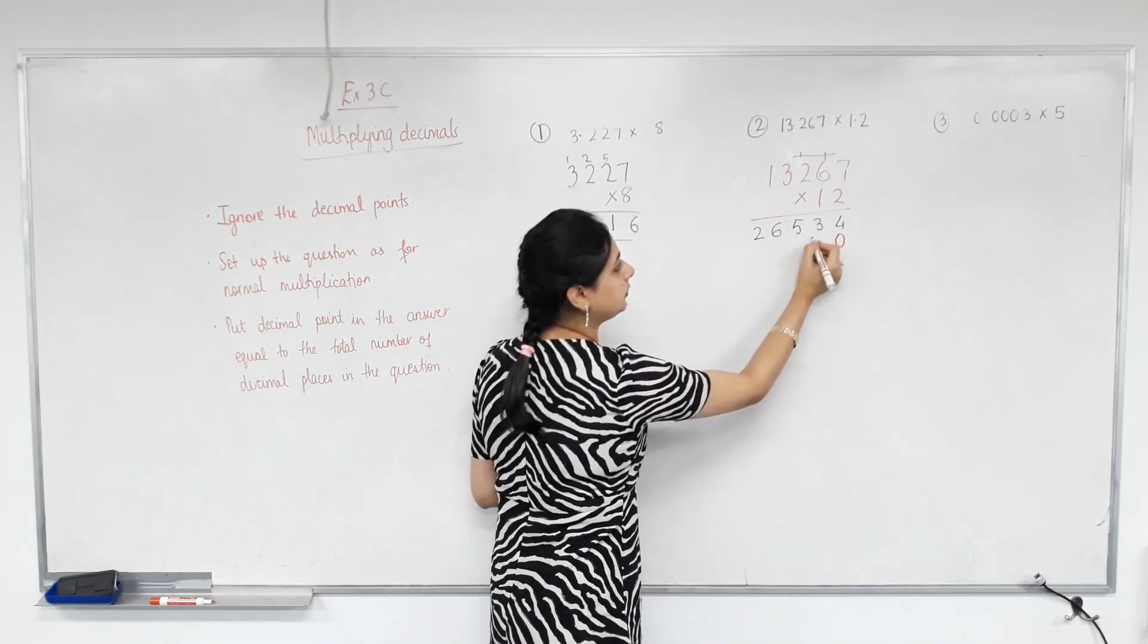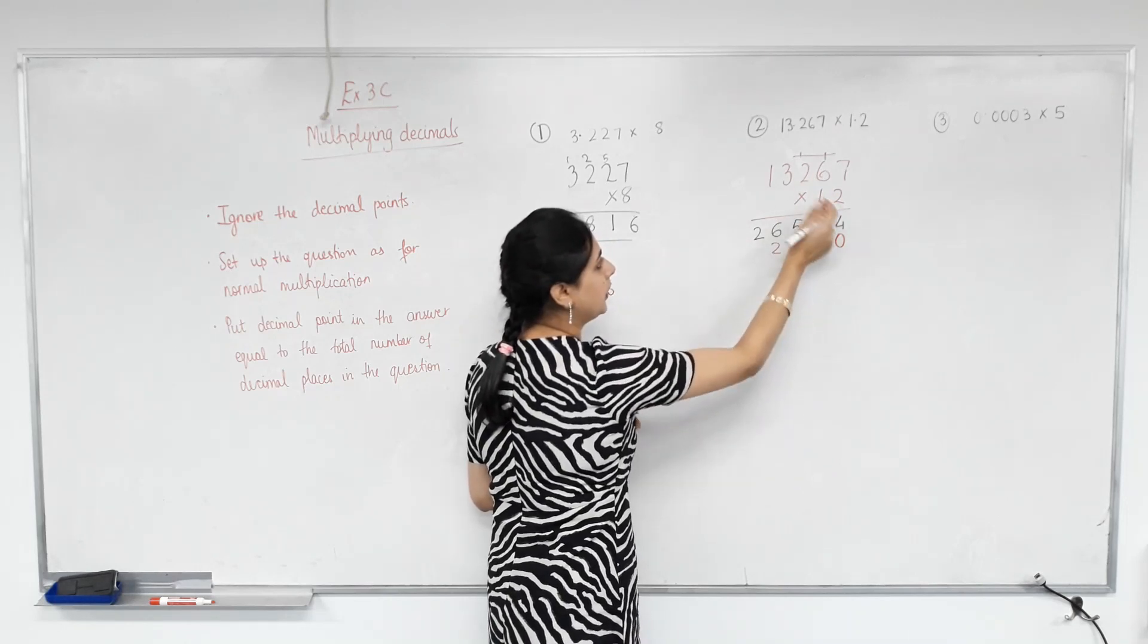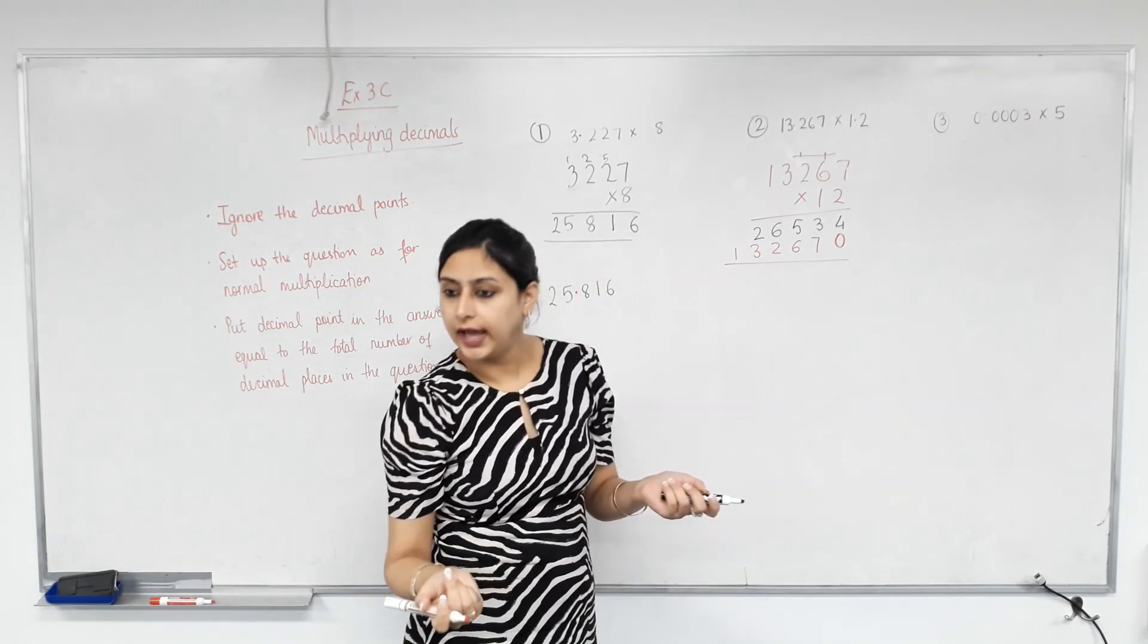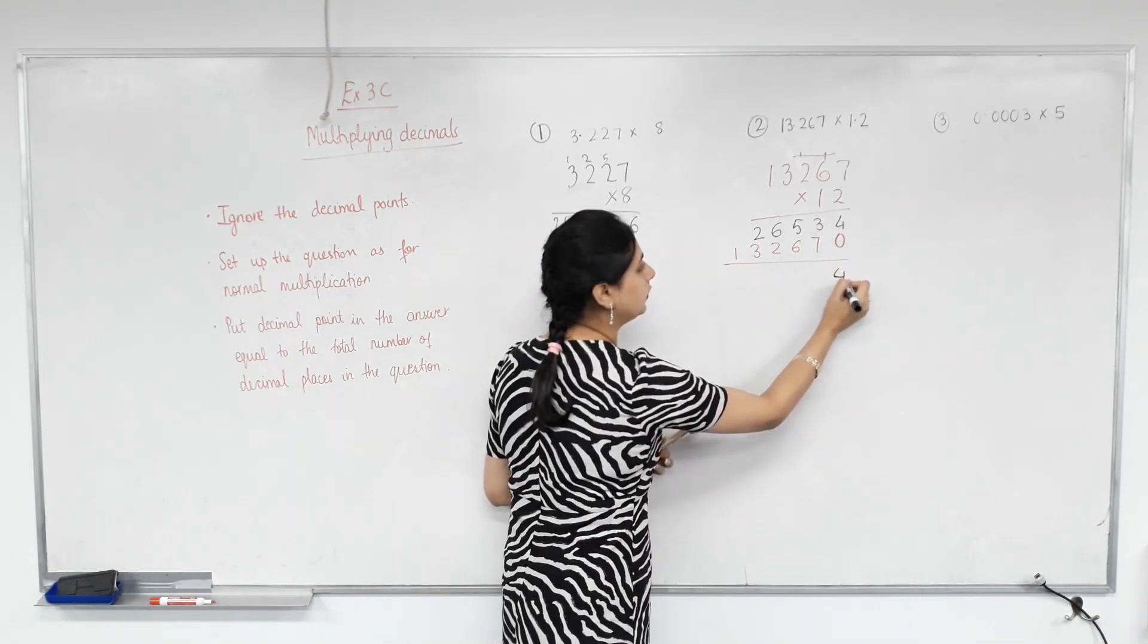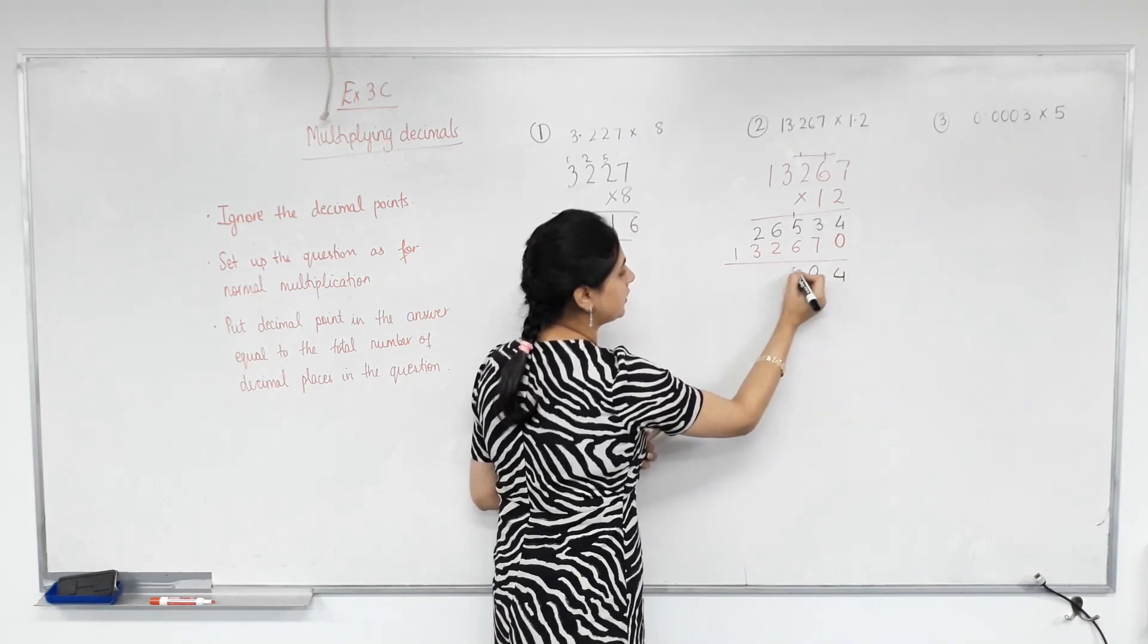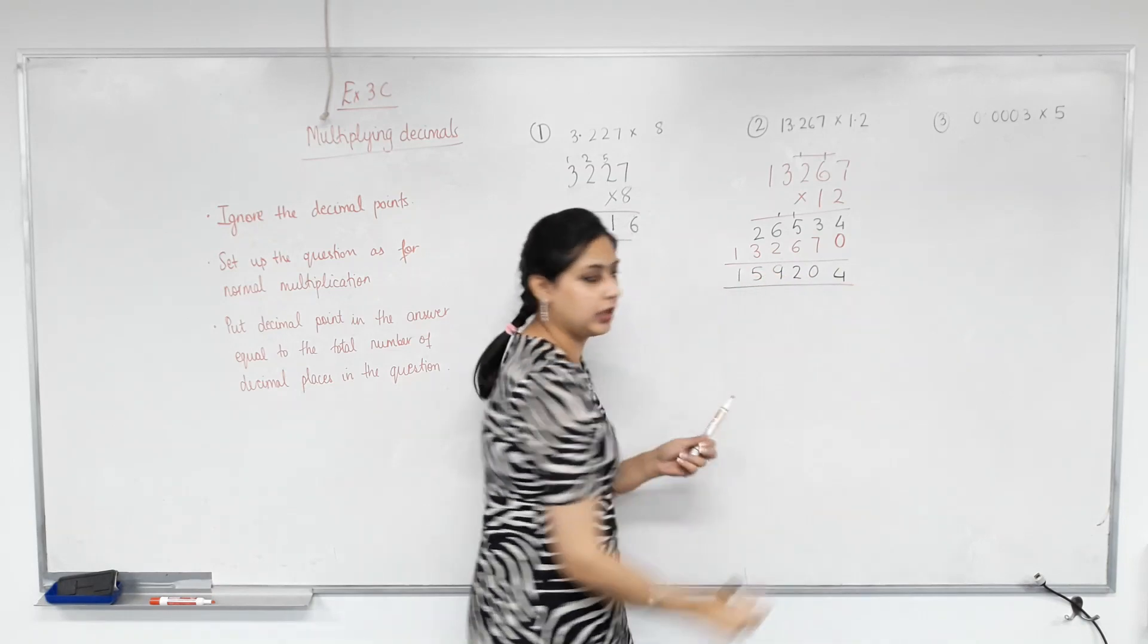1 times 7? 7. 1 times 6? 6. 1 times 2? 2. 1 times 3? 3. 1 times 1? 1. And now we add. 4. 7 plus 3? 10. 6 plus 6? 7 plus 4. That's 9, 5, and 1. We're good with that, aren't we? Yes.